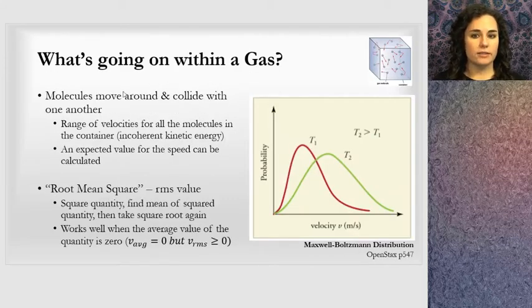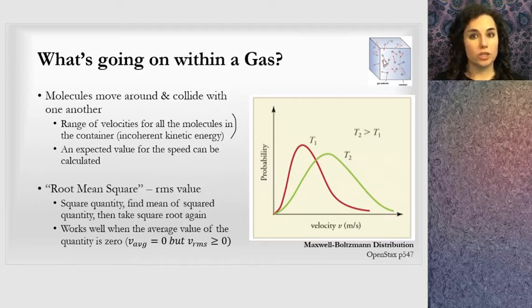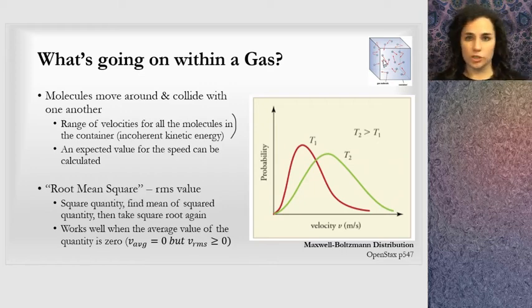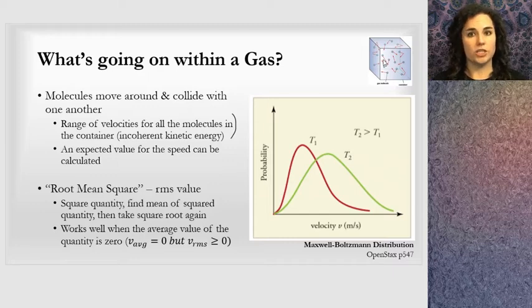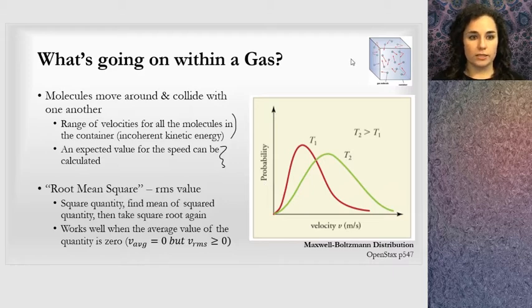What's going on within this gas? The molecules are moving around and colliding with one another and with the walls of the container. There's a range of velocities—just because this is one whole temperature doesn't mean all molecules are at one velocity. Some are going this way, some that way, some up, some down, bouncing off walls. They're bouncing into each other and exchanging energies, so there are initial and final velocities, but overall all of those will have an average speed which we can calculate.